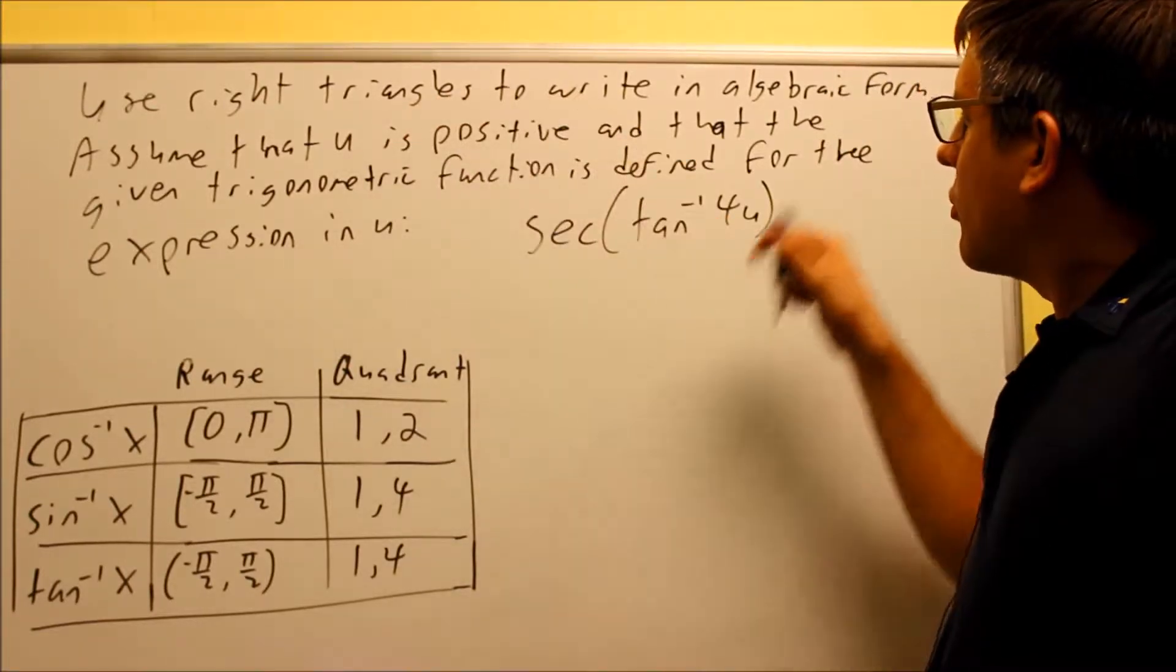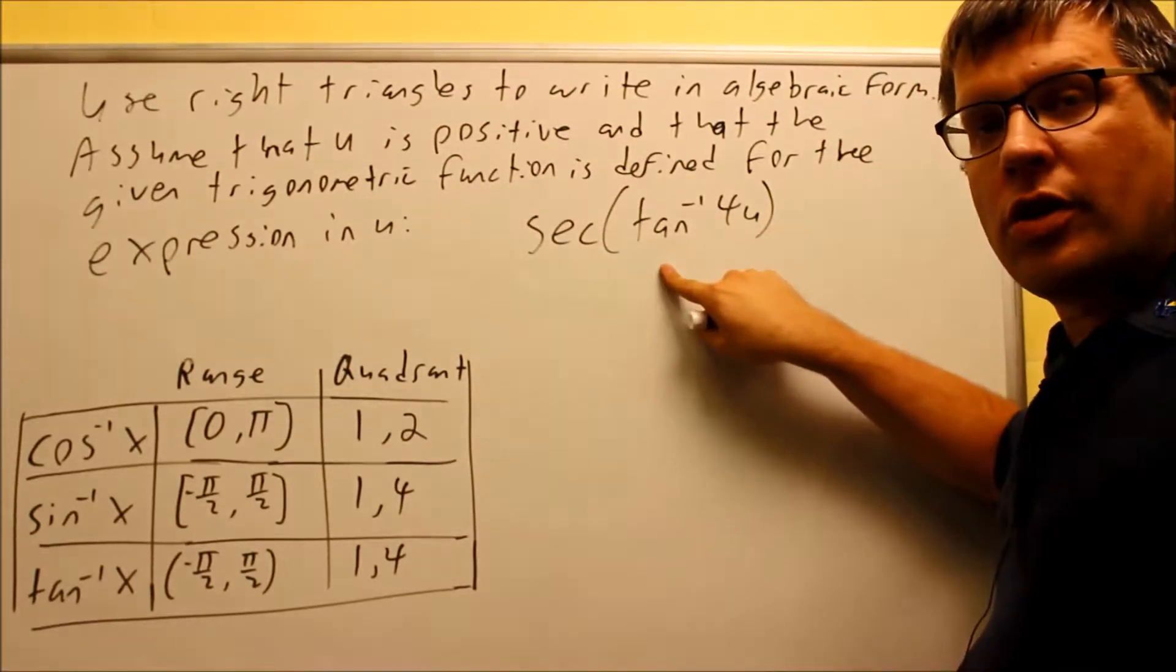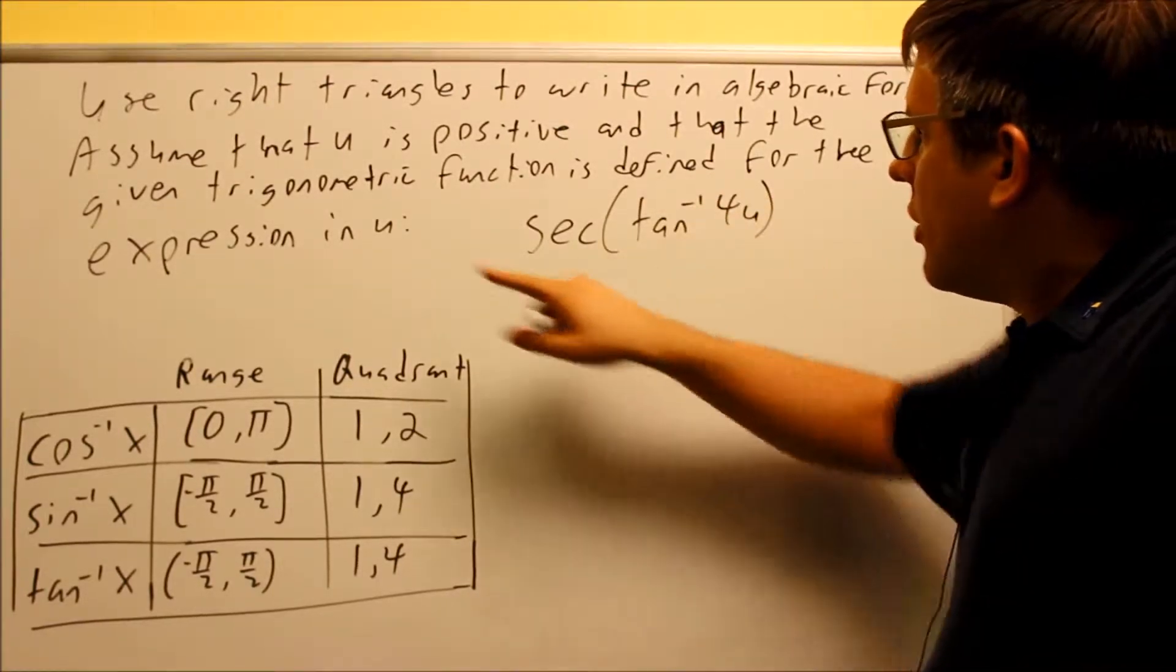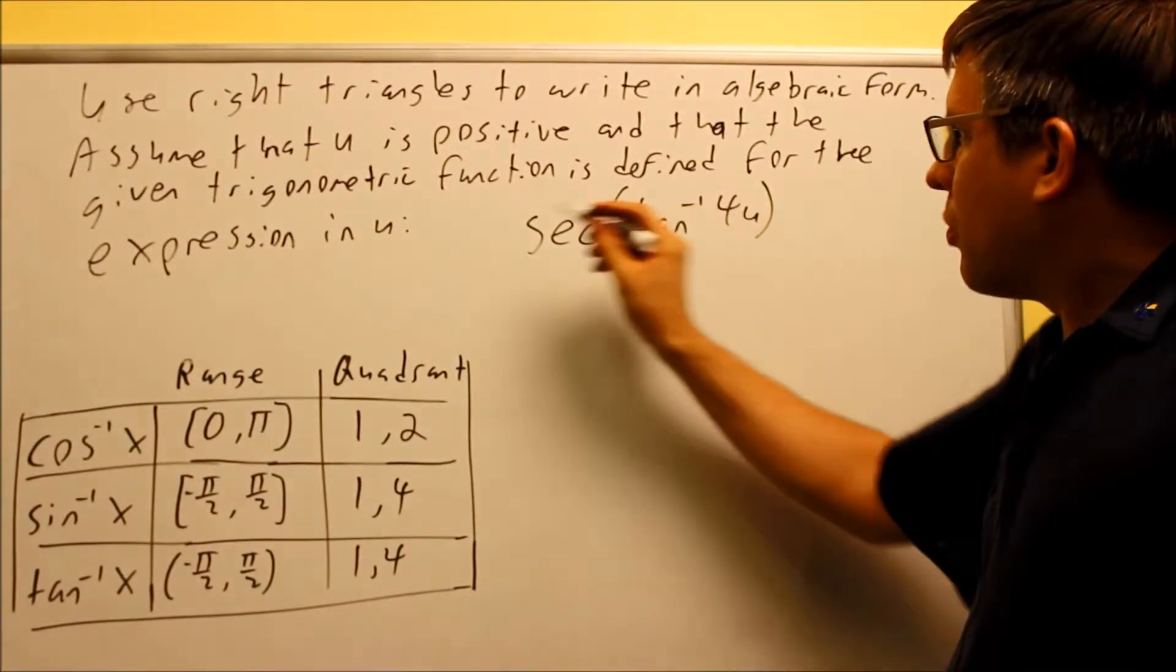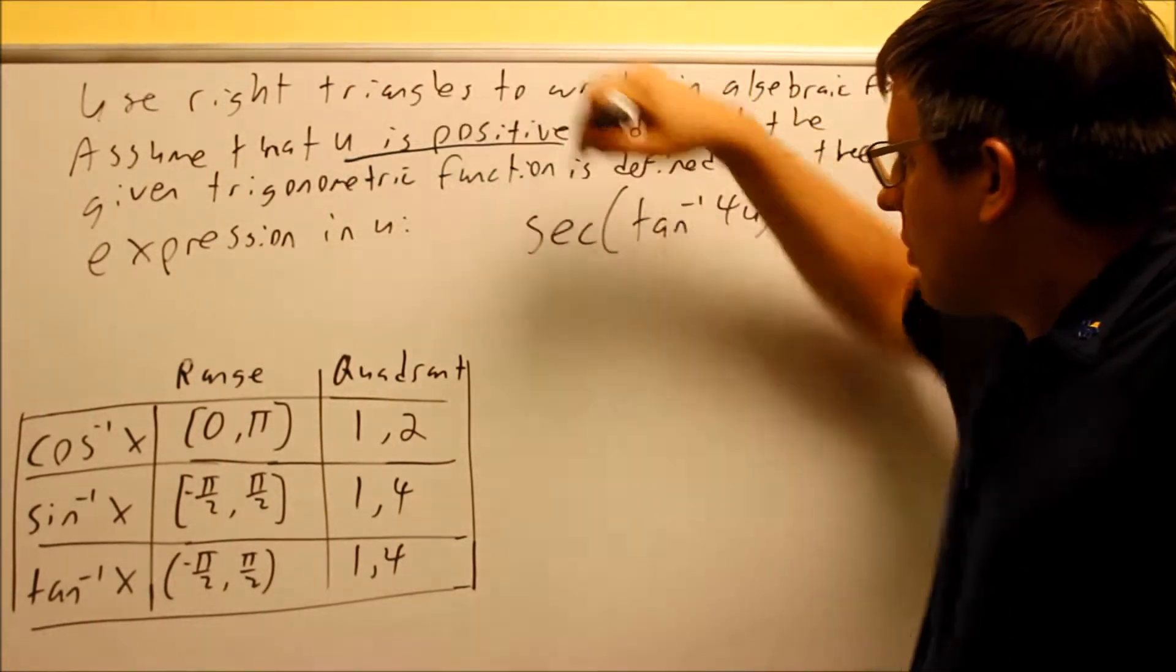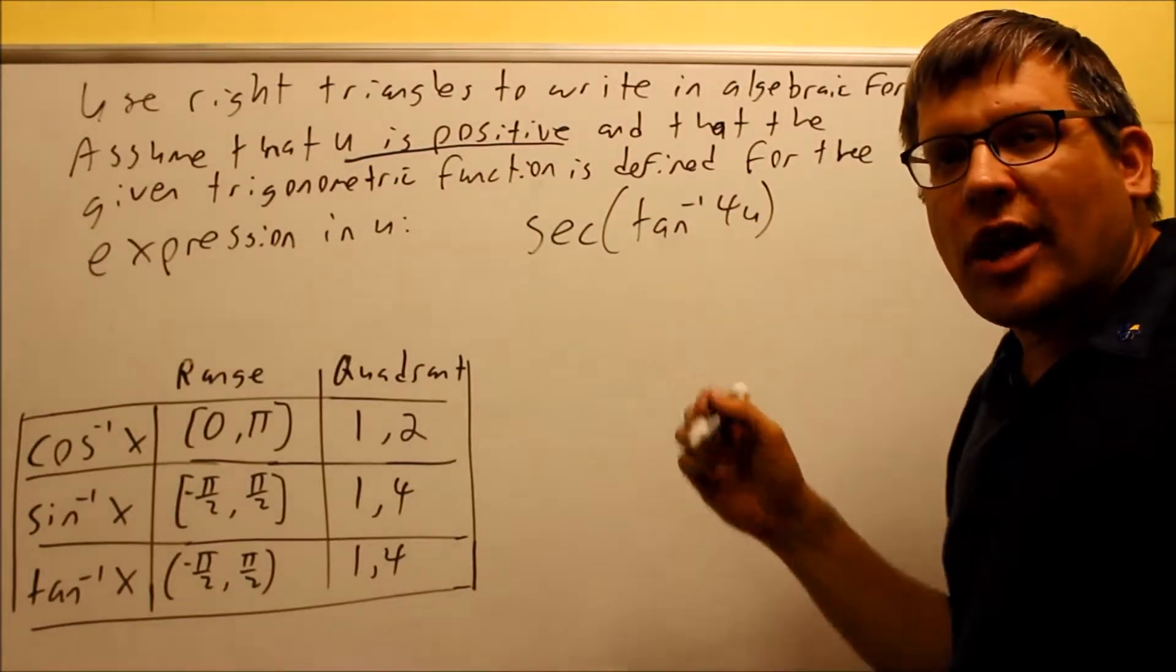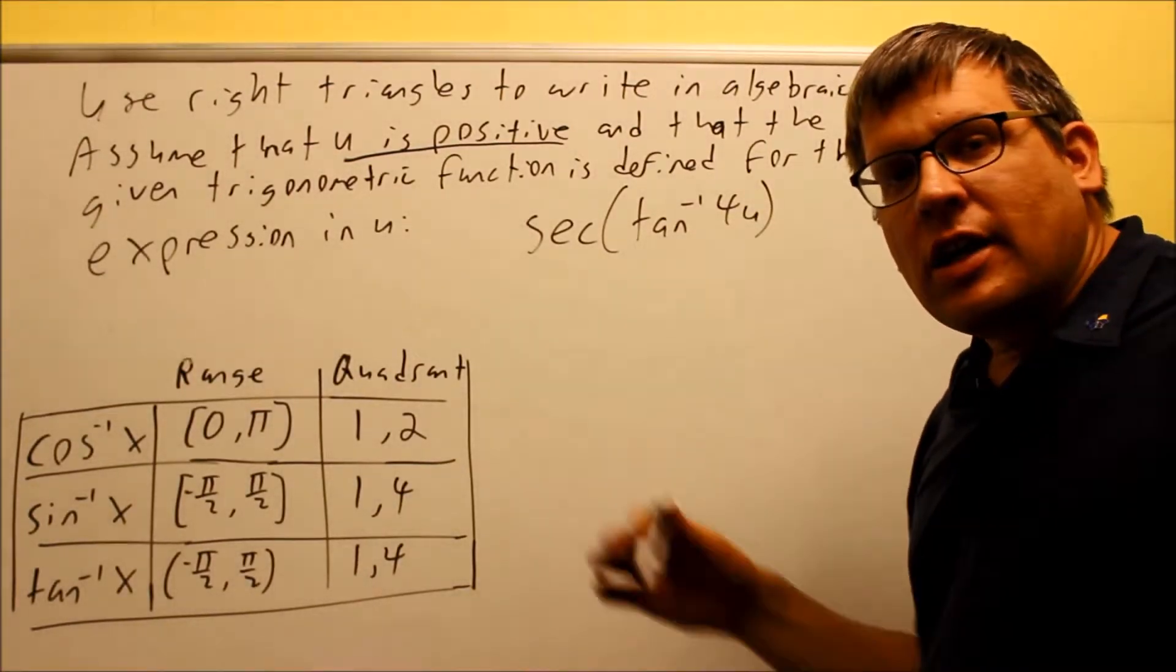So we're going to use right triangles to write this in algebraic form here. Assume that the U that you have in here, this is important, it says that U is positive and then the rest of it just says that U is basically defined and we don't have anything that's undefined or anything like that.